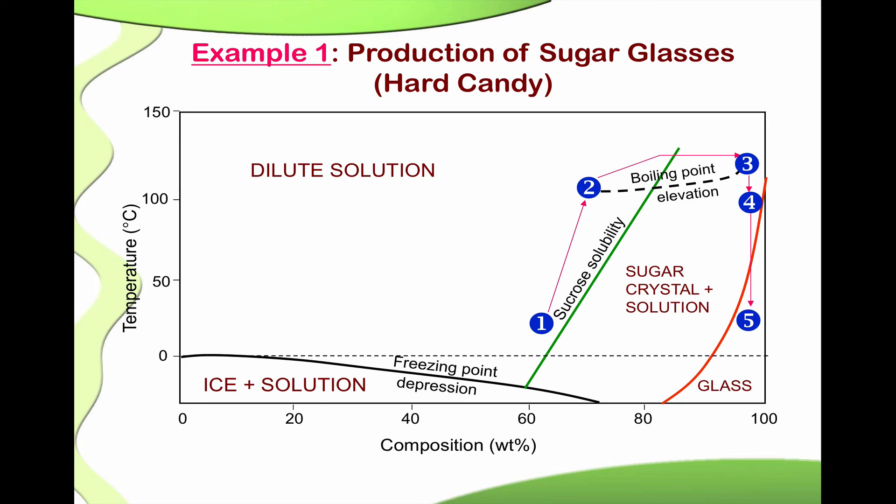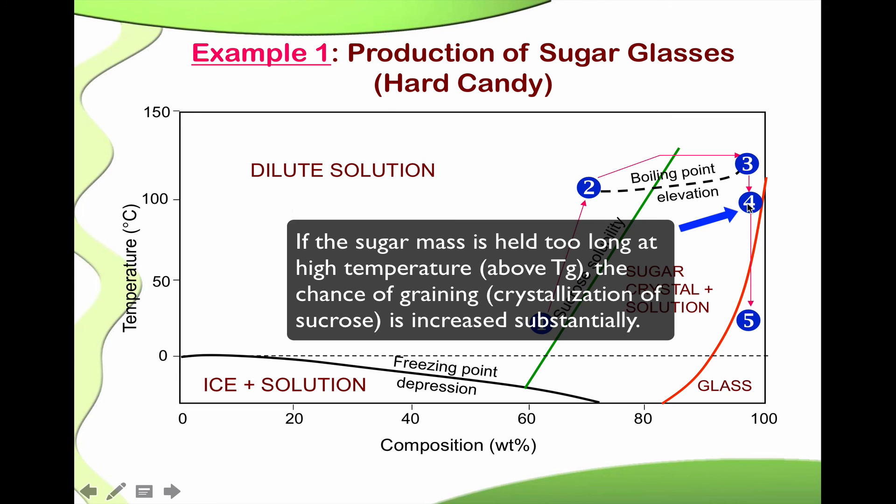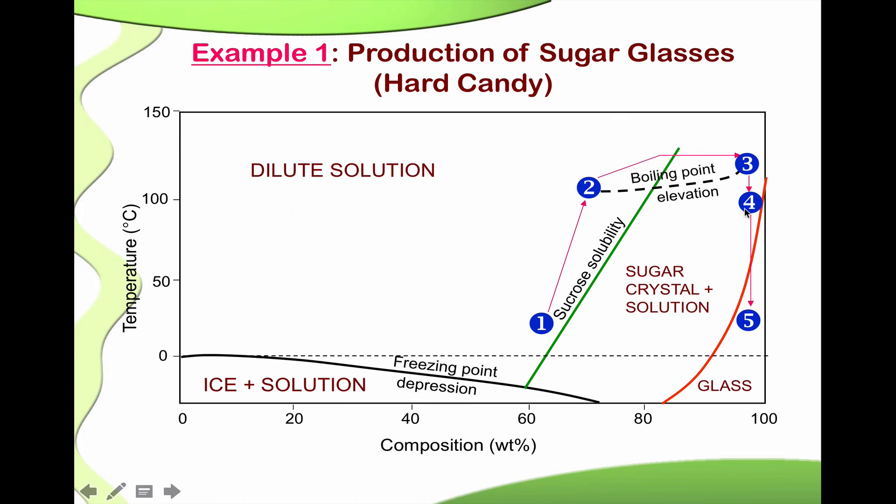Here, the process of cooling here must be done very quickly at this point to avoid crystallization. So, if we do it very slowly here, because in this point at point 4 here, the sugar mass is highly viscous but still in the rubbery state. So, if we stay at this point too long, then we may allow the crystallization to occur. Because remember, this is actually in the rubbery state above. This is actually perhaps in the metastable or in the labile state where crystallization can occur.